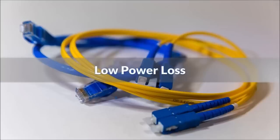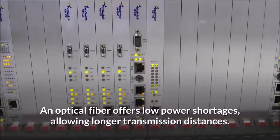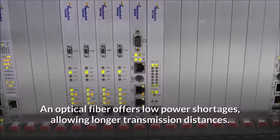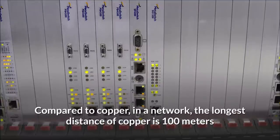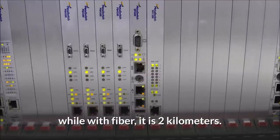Low power loss. An optical fiber offers low power shortages, allowing longer transmission distances. Compared to copper, in a network, the longest distance of copper is 100 meters while with fiber, it is 2 kilometers.